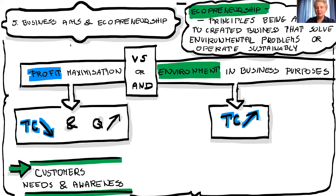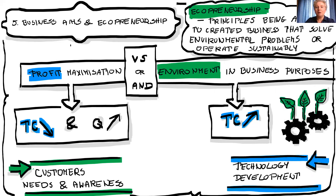So environmental issues in the business make the business more costly, meaning the margin and profit will be lower. How can the business solve this problem? Only technology development and procedure development can make these issues less costly. New eco-technology could reduce those costs. So the question is how we can push businesses to develop this eco-technology.